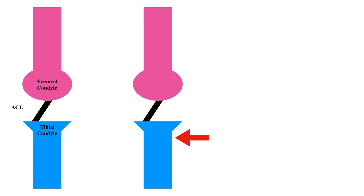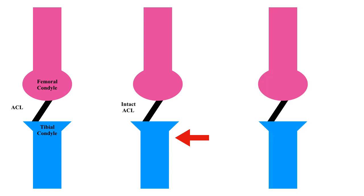When an anteriorly directed force is given to the tibia, the intact ACL prevents the anterior subluxation of the tibia. This is demonstrated in the sagittal view of the knee joint.